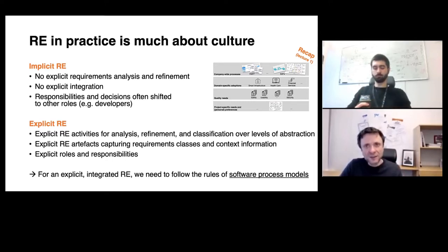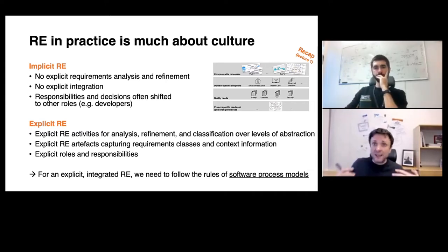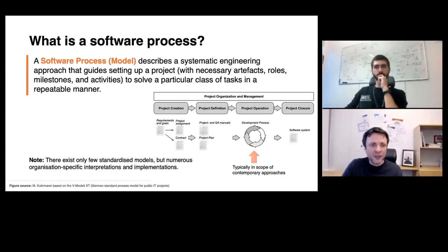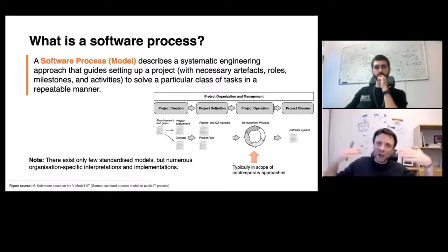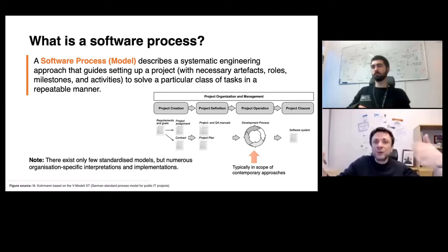A software process model describes a systematic engineering approach that guides setting up and executing a software development project with all the necessary artifacts, roles, milestones, activities, and so on, to solve a particular class of tasks in a repeatable manner. This means having one central reference model that I use and reuse across different projects — I can use it for the development of one particular class of systems.